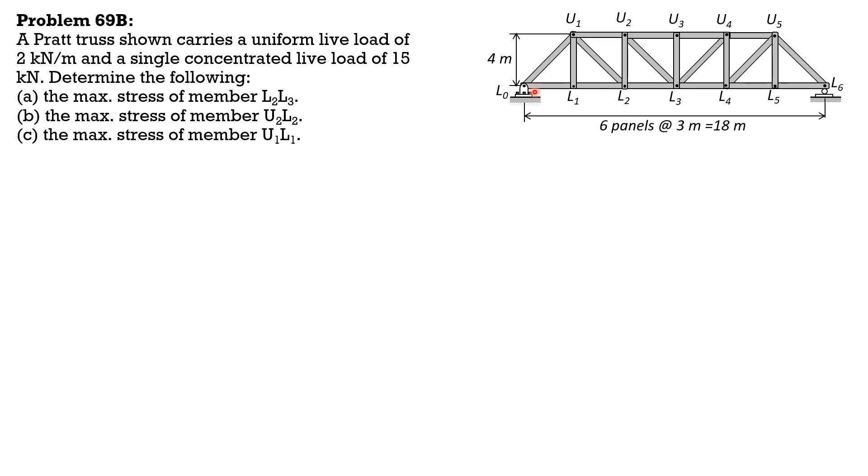But we have to first construct the influence line for the reaction of LO. The shortcuts of positive, you just push this, then 1, then 0 at L6.